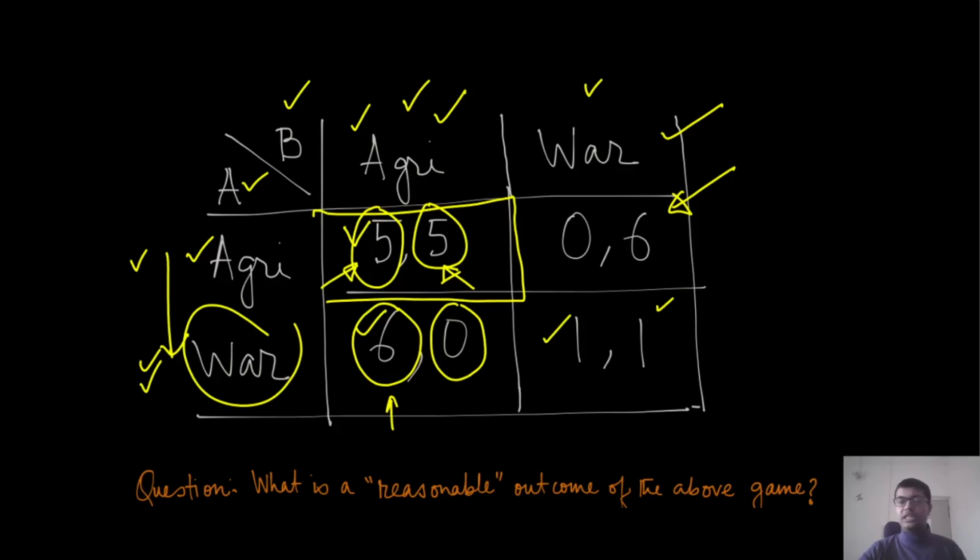The first entry is the payoff of player A, so it is increasing in this direction. If player B is choosing war, then what should player A do? Again, we can see that this payoff is smaller than this payoff, so therefore again player A should choose war. It means that irrespective of what player B does, player A should always pick war if he wants to maximize his payoff. Similarly, this game is very symmetric. This number is smaller than this number, so even when player A chooses either agriculture or war, player B's best response will be to choose war.